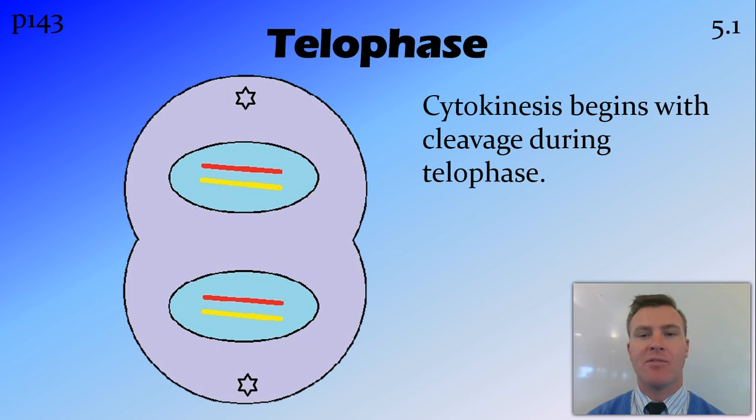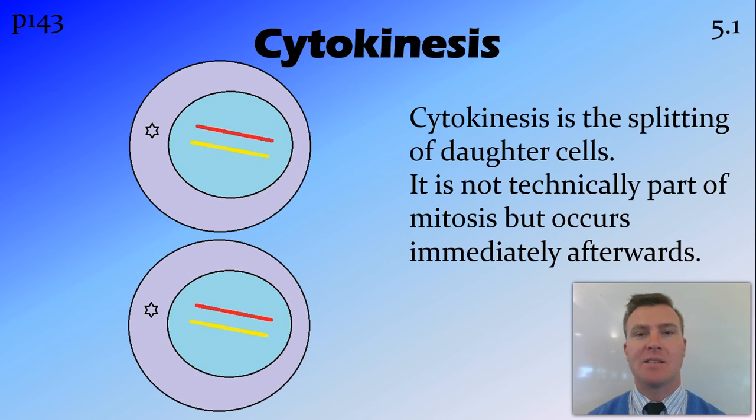Then cytokinesis starts. And the first part of cytokinesis is cleavage, and it happens during telophase. Then cytokinesis proper occurs after telophase, making it not technically part of mitosis, as I said before. And it is what results in having those two daughter cells.